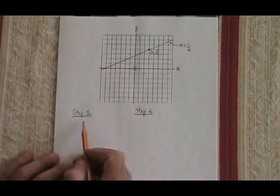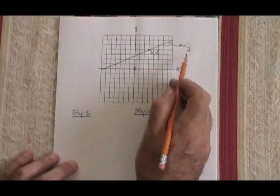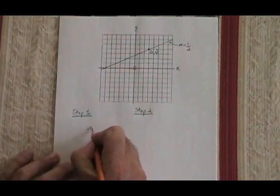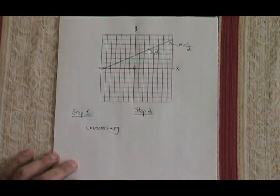Since the whole point of step 1 was to find the slope in the form of a fraction, and we already have m equals 1 half, we don't need to do step 1. So this is actually easier than usual.